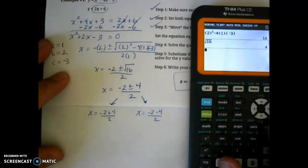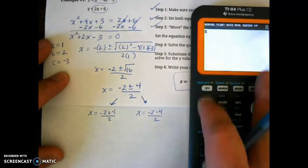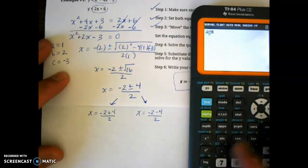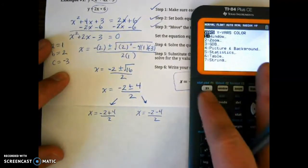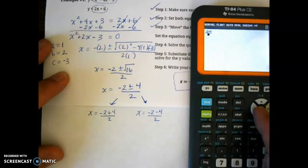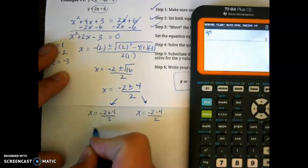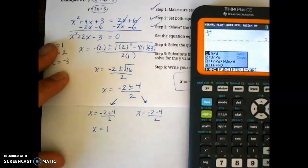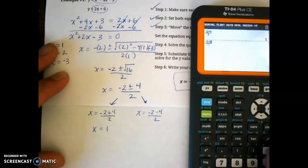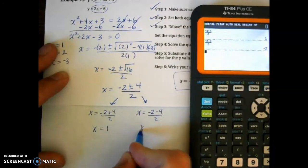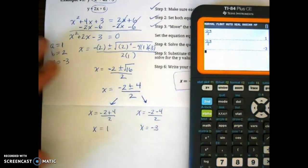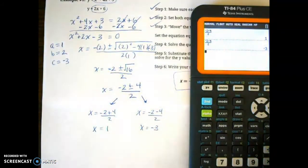So then, you could put this right into your calculator if you'd like, or you could do it in your head. So this side is x equals 1. And on the right side, with the subtraction, negative 2 minus 4 over 2, and you get negative 3. So, so far, we have our x values of where the two equations would intersect.